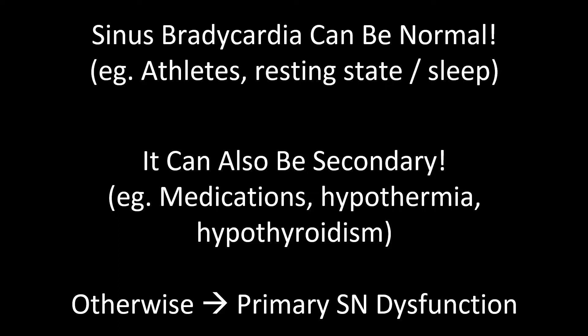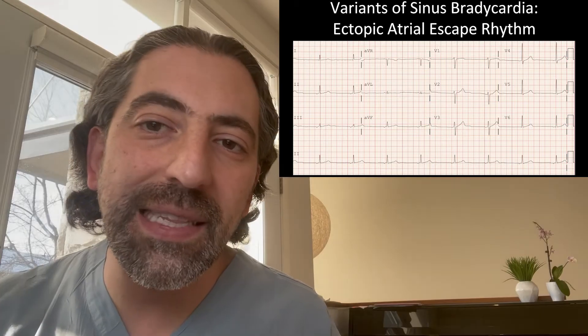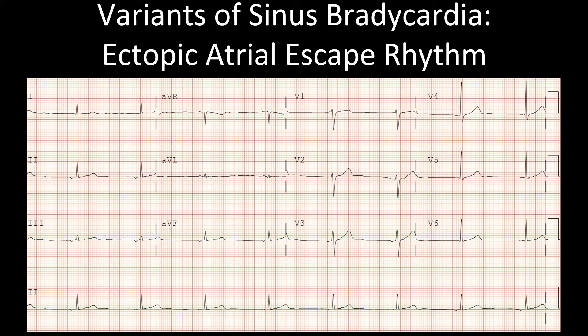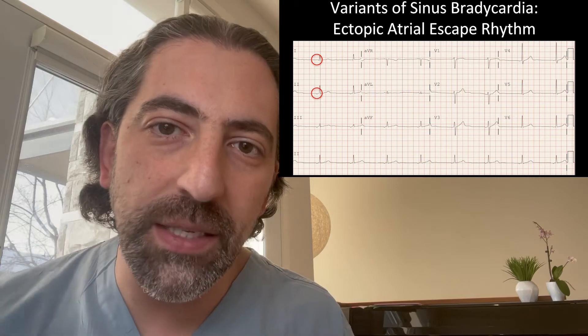It's important to talk about the variants of sinus bradycardia. When the sinus node slows down, other parts of the conduction system may take over — either a different focus within the atria or the AV node itself. When a different focus within the atria takes over, you'll see a P-wave of a different morphology than a normal sinus P-wave. For example, this is a case where the patient is bradycardic, but instead of sinus bradycardia, we see an ectopic atrial escape rhythm. We know it's a different focus because the P-wave is flat in lead 1 and negative in lead 2, meaning it must be coming from somewhere other than the normal sinoatrial node, which is in the top right of the heart.